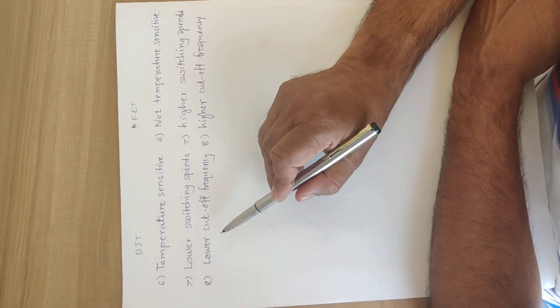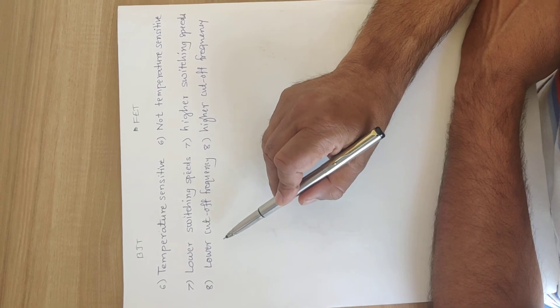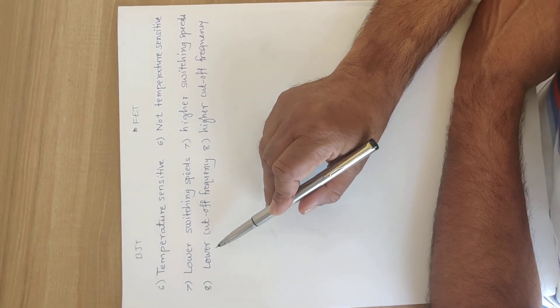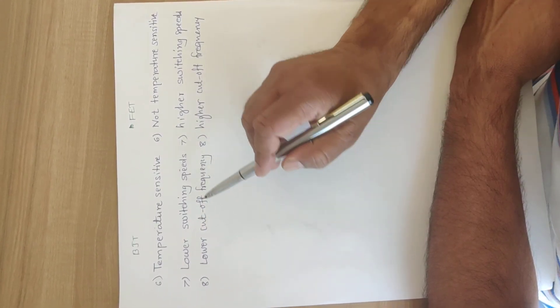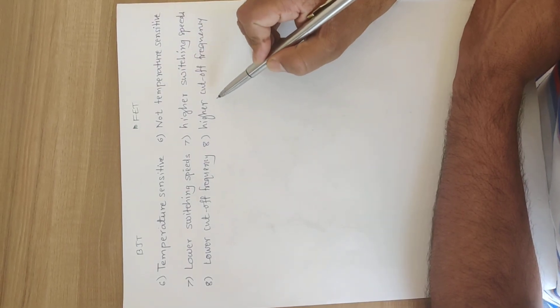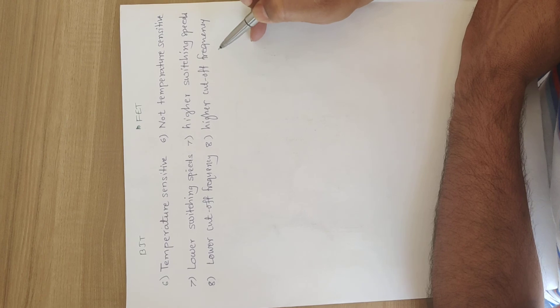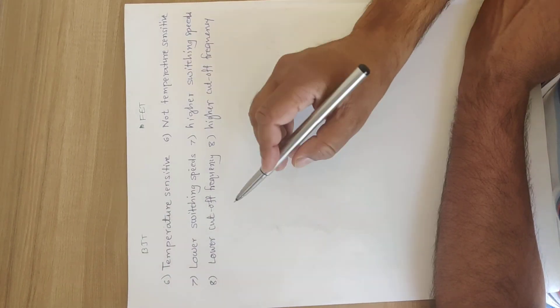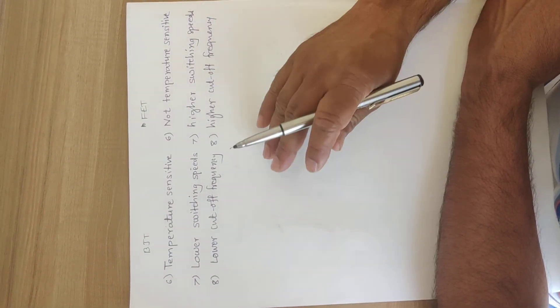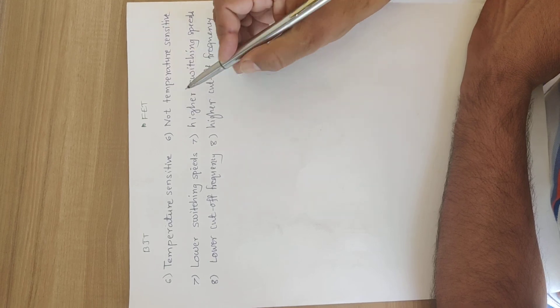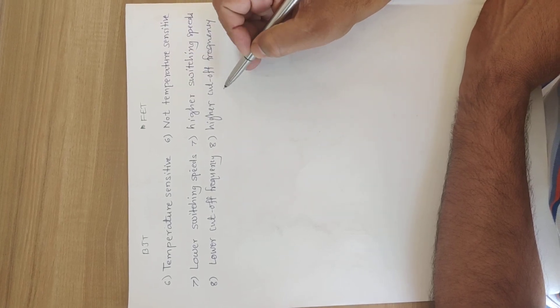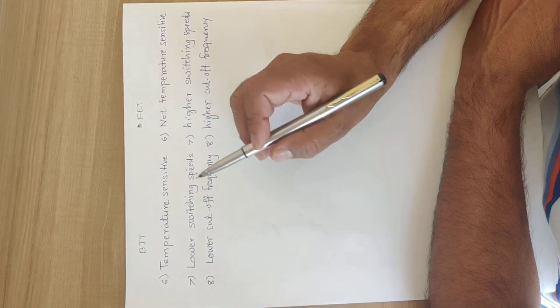BJT is generally used for low range amplifications, that is the lower cutoff frequency, and FET is having very high frequency response, higher cutoff frequency. And BJTs and FETs both are used in amplifiers. FETs are generally used for microwave and BJTs are for audio frequency amplifiers.